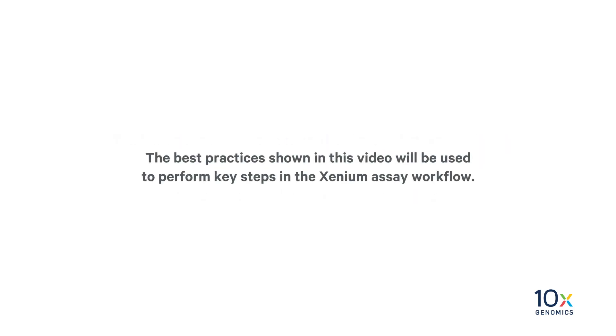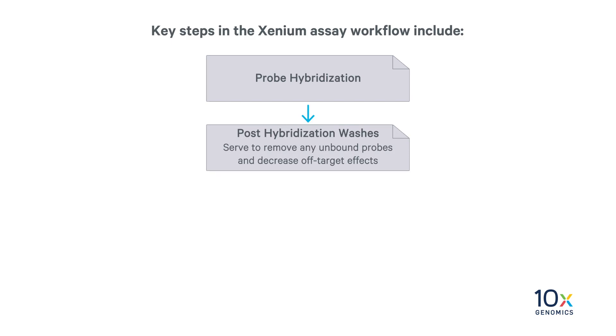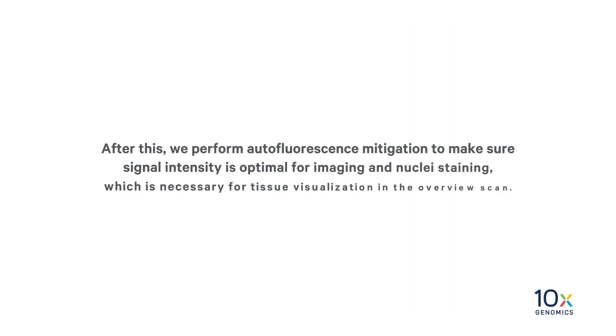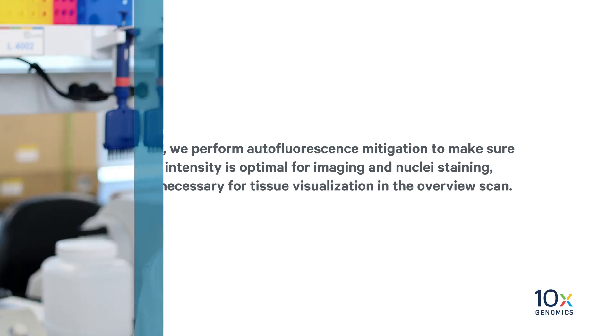The best practices shown in this video will be used to perform key steps in the Xenium assay workflow. Key steps in the Xenium assay workflow include probe hybridization, post hybridization washes, which serve to remove any unbound probes and decrease off-target effects, probe ligation, and amplification. After this, we perform autofluorescence mitigation to make sure signal intensity is optimal for imaging and nuclei staining, which is necessary for tissue visualization in the overview scan.